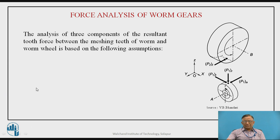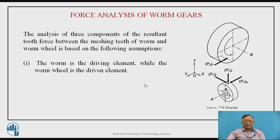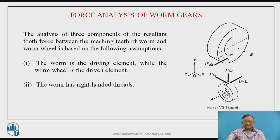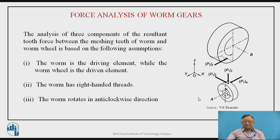The worm gear consists of a worm and worm wheel as shown, and power is transmitted from the worm to the worm wheel. Before determining the forces, certain assumptions are made: the worm is the driving element while the worm wheel is the driven element. The worm rotates anticlockwise and has right-handed threads.